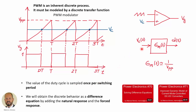The common model for the PWM modulator has the control voltage at the input and the duty cycle at the output, with a gain of 1/V_PP, where V_PP is the peak-to-peak voltage of the sawtooth waveform. However, this is a very simple model in which we are not considering the sampling effect of the PWM modulator.